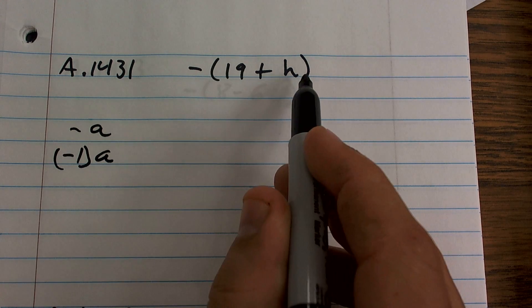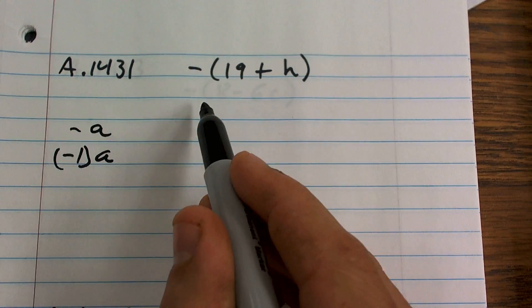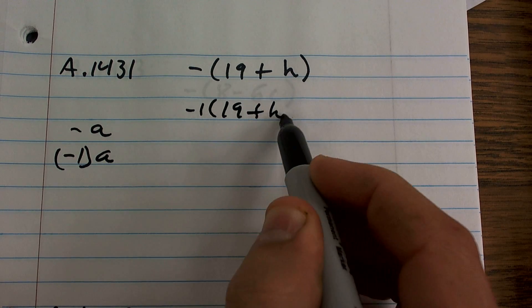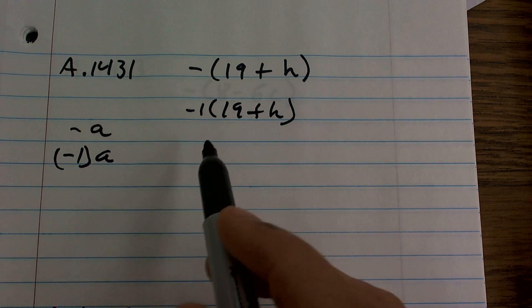I can rewrite this negative times the parenthesis as negative 1 times 19 plus h. Now,